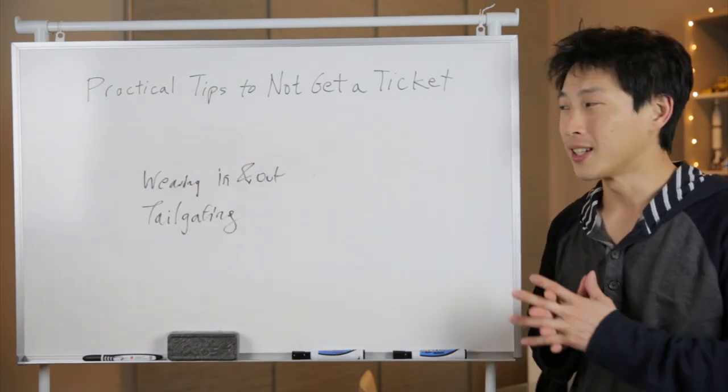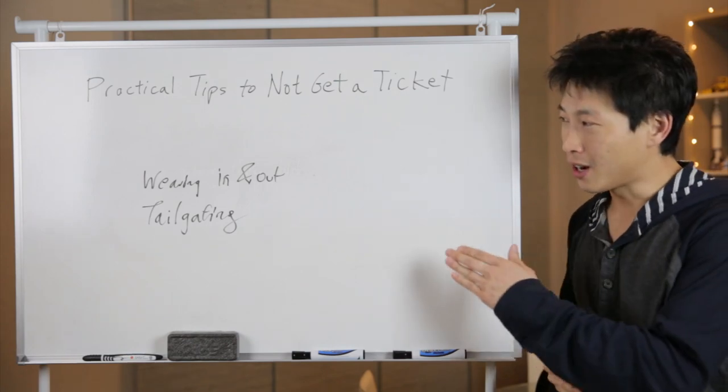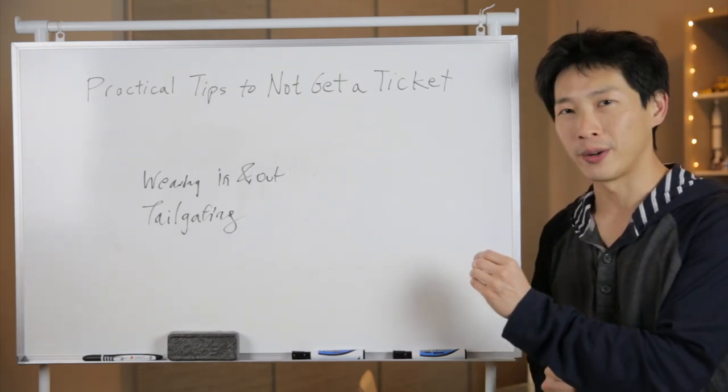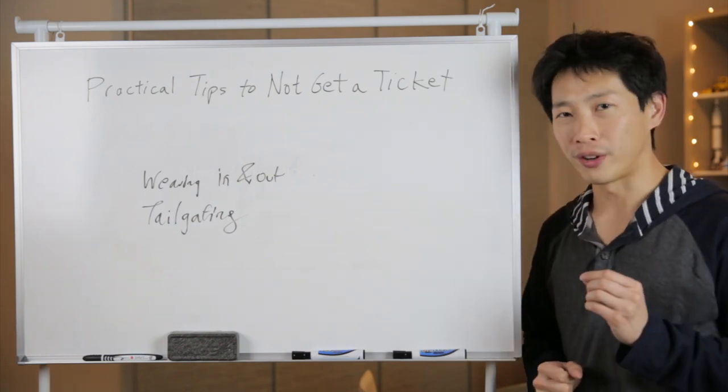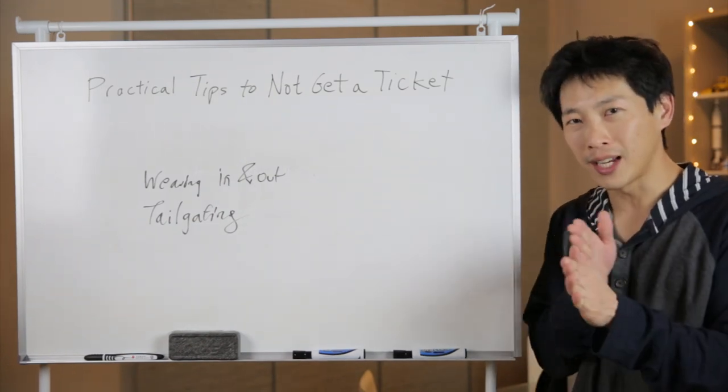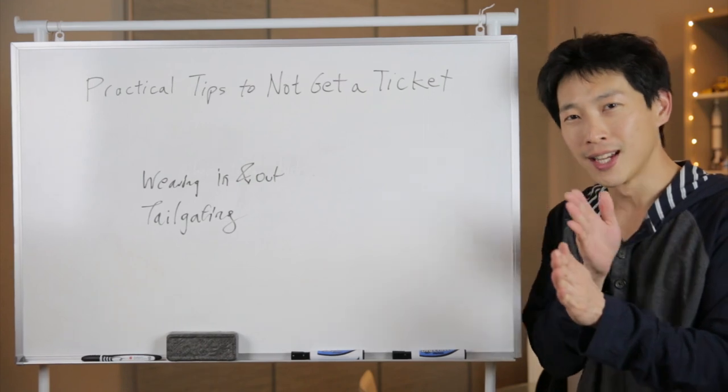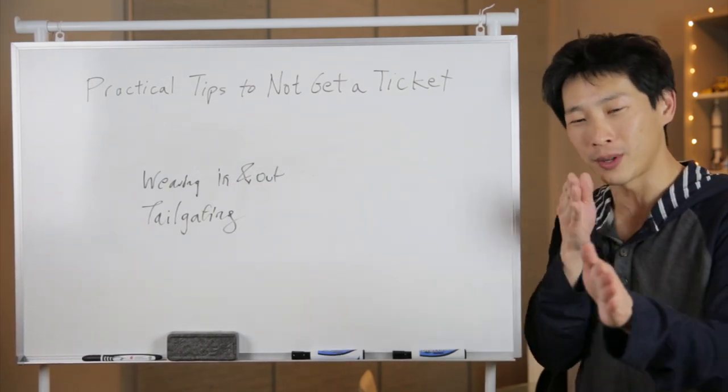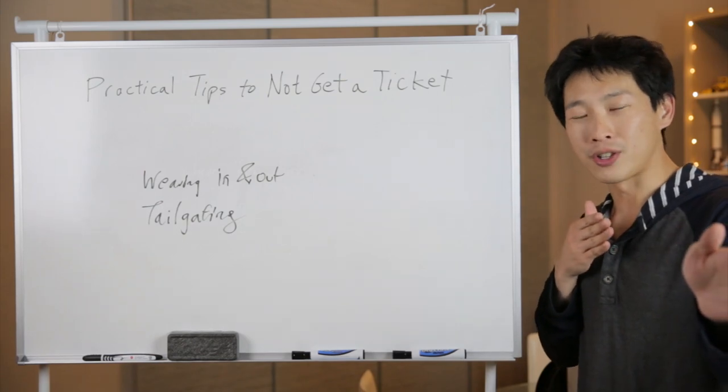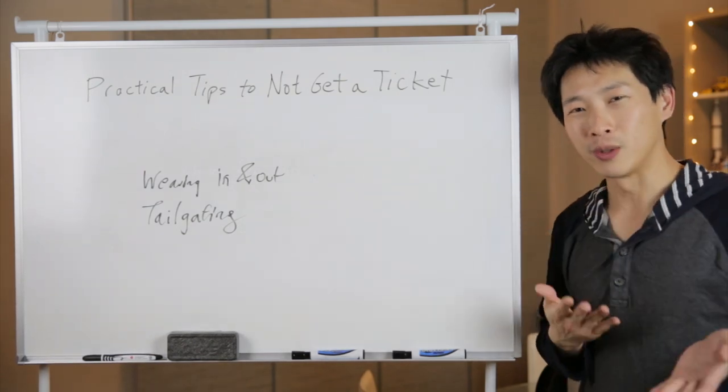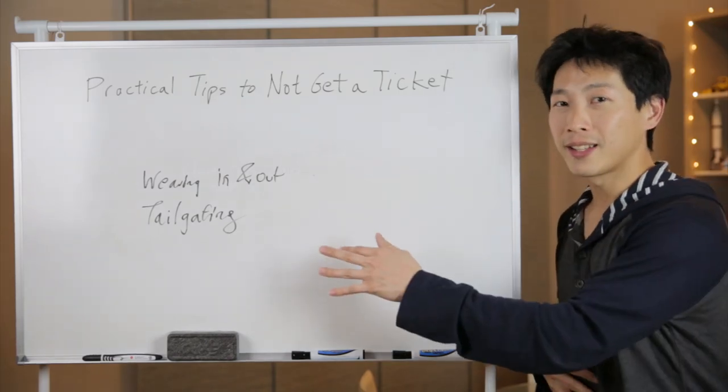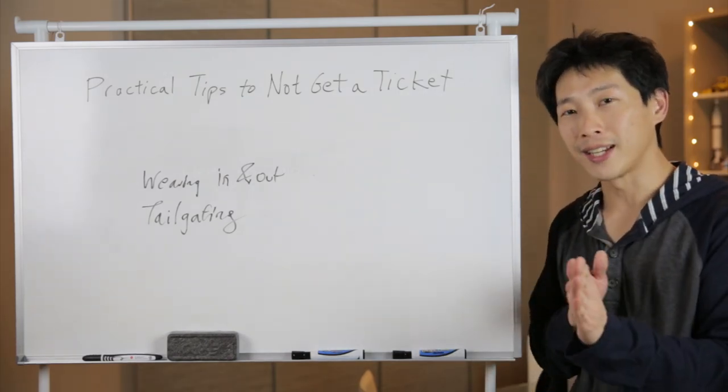The fifth tip to not get a ticket is to not weave in and out and not tailgate. Most likely, you're going to do this kind of stuff when you're in a hurry. So you really should refrain yourself from going in and out of a lane because that's just a beacon of saying stop me. It's really obvious for someone that's a couple cars back and you're just going in and out. It's really easy to see you and the police is going to come and stop you. Tailgating is a little bit harder to see compared to weaving in and out, but they can just as well see this if you're closer up to you.